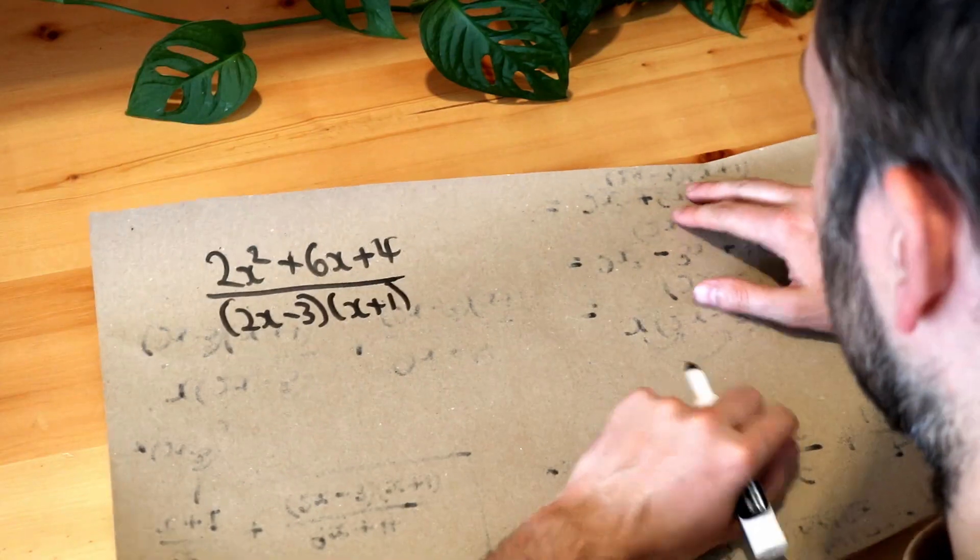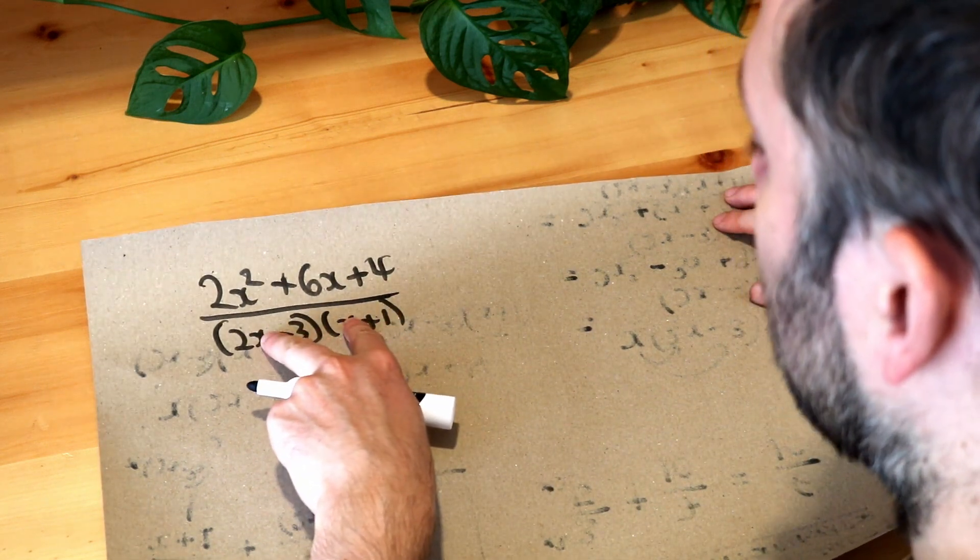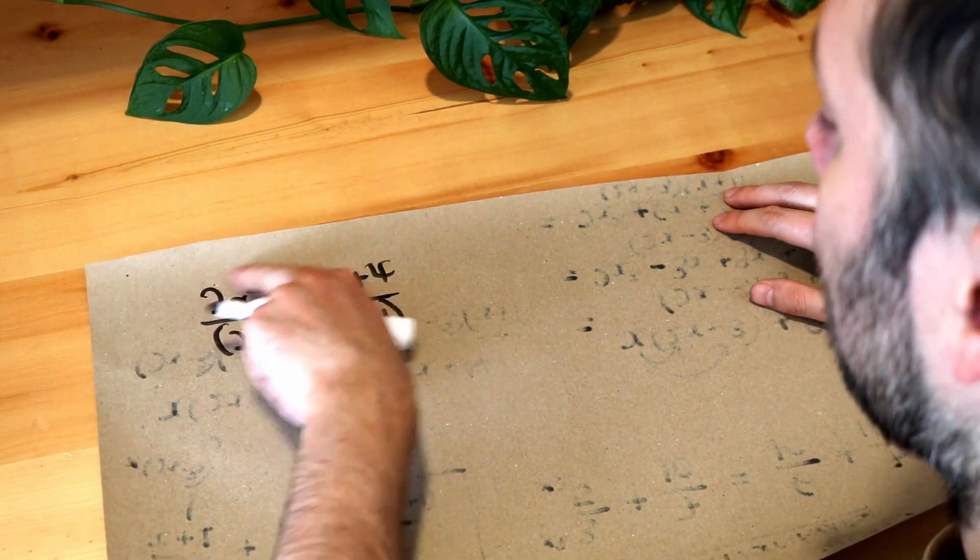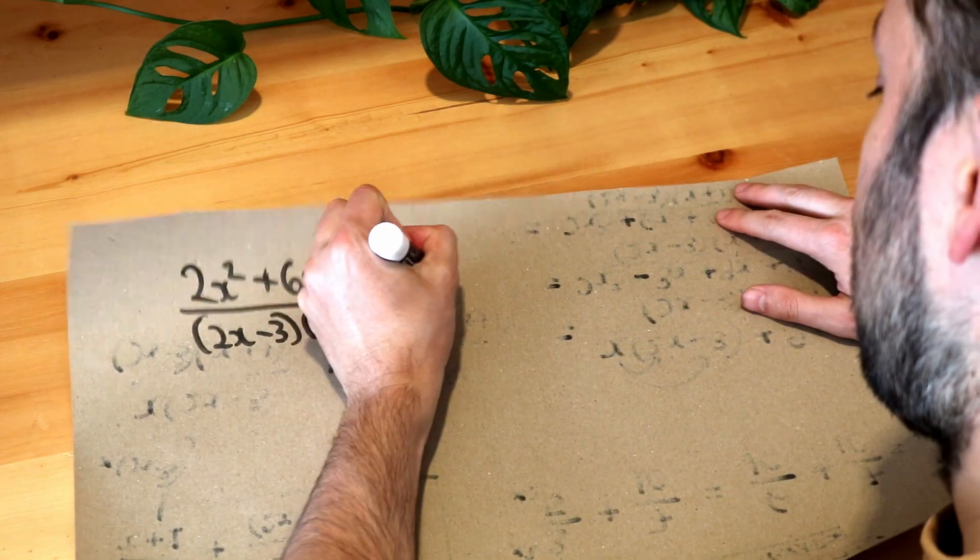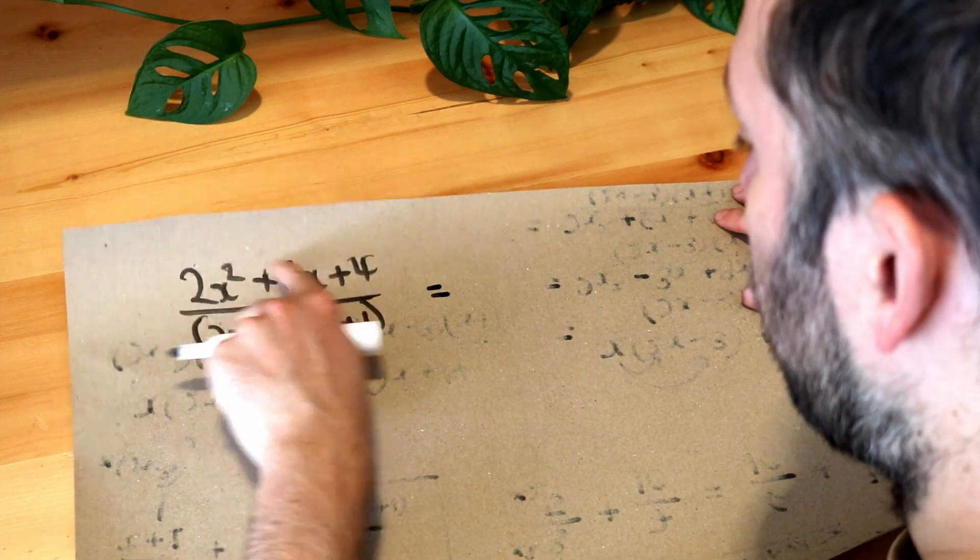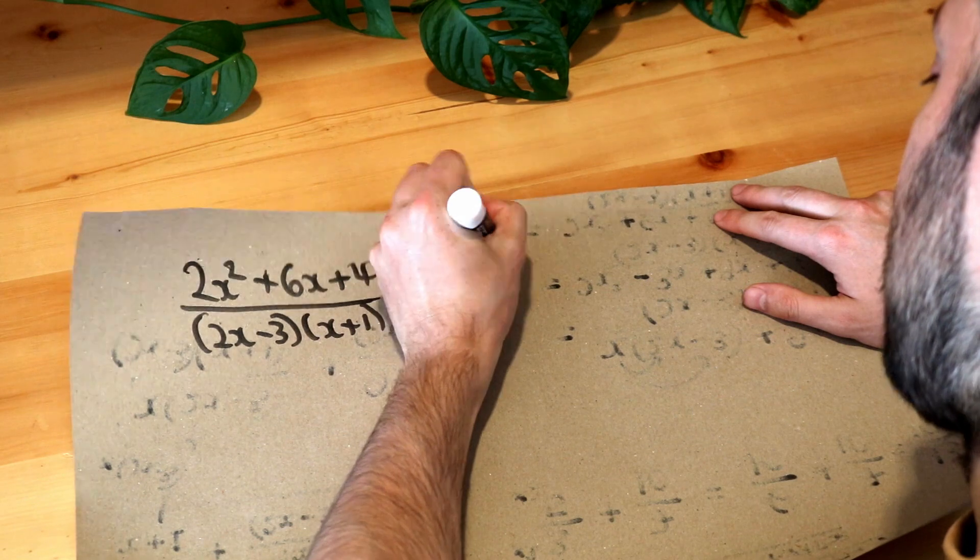Now because I've run out of space I've gone on to the other side of the paper but as I said we shouldn't expand out this denominator because actually if we factorise this simplified numerator it might cancel with something at the bottom. So notice all of these terms in the numerator have a factor of 2 in common so I'm going to factorise that out.